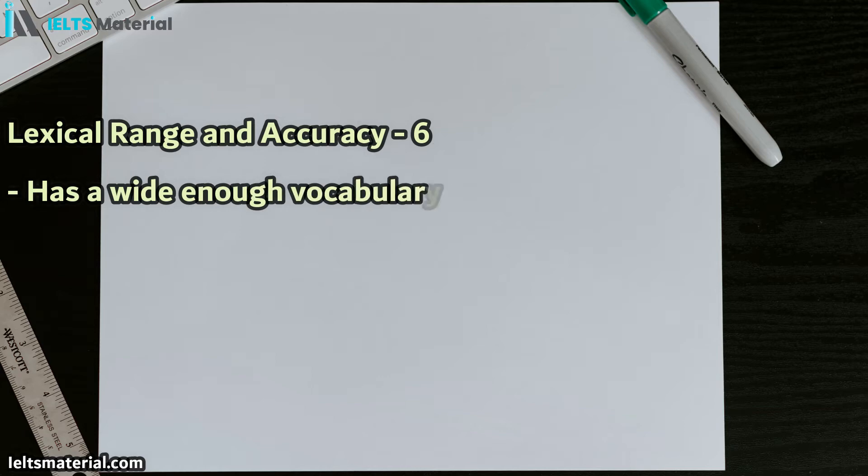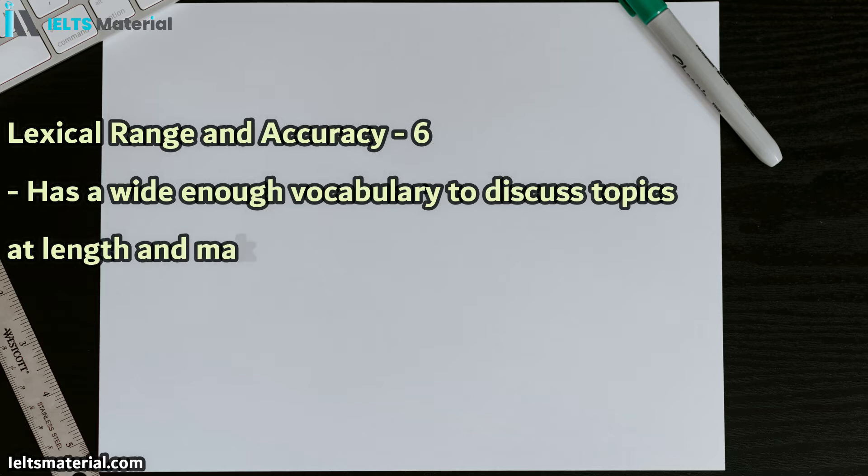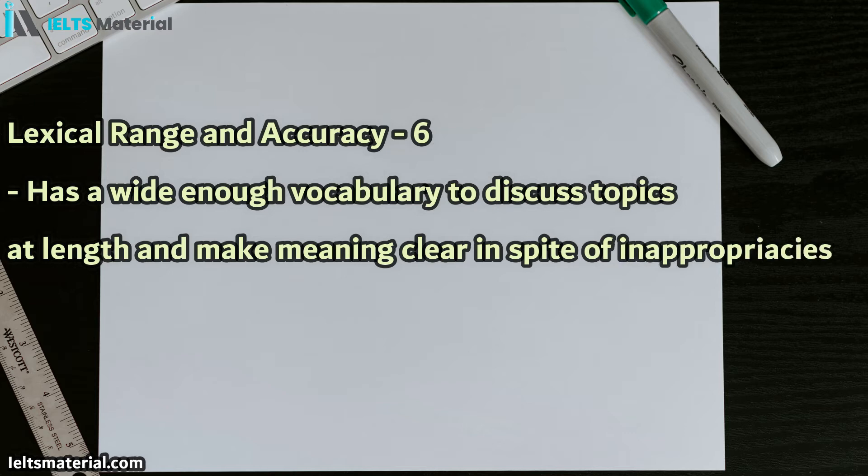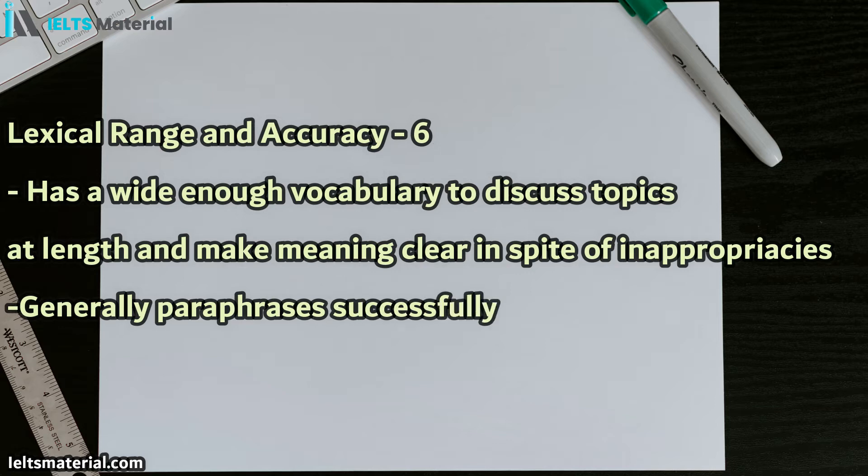Next, let's have a look at lexical range and accuracy. This is what it looks like at a band 6. And again, you have a wide enough vocabulary to discuss topics at length, and make meaning clear in spite of some inappropriacies. So, you don't have to be perfect here, but you do have to be able to talk about a topic fairly well, and also you need to paraphrase successfully. This means kind of restating, or explaining in more detail, a point that you're making.